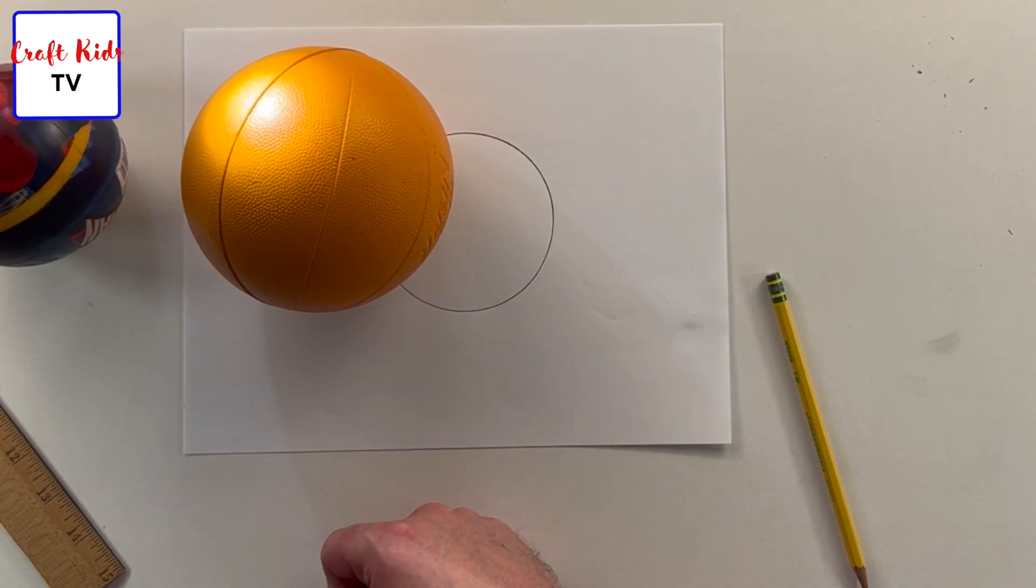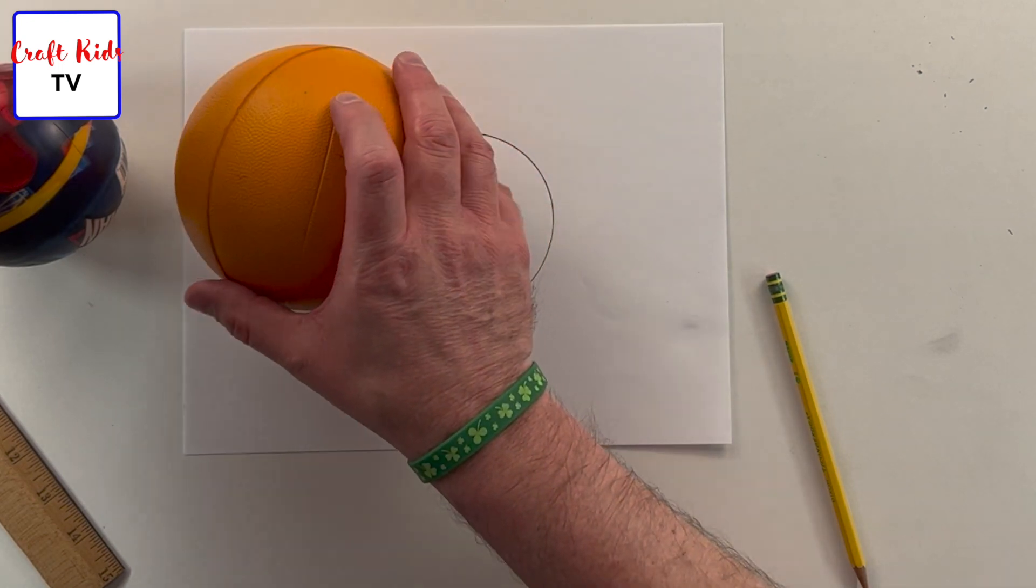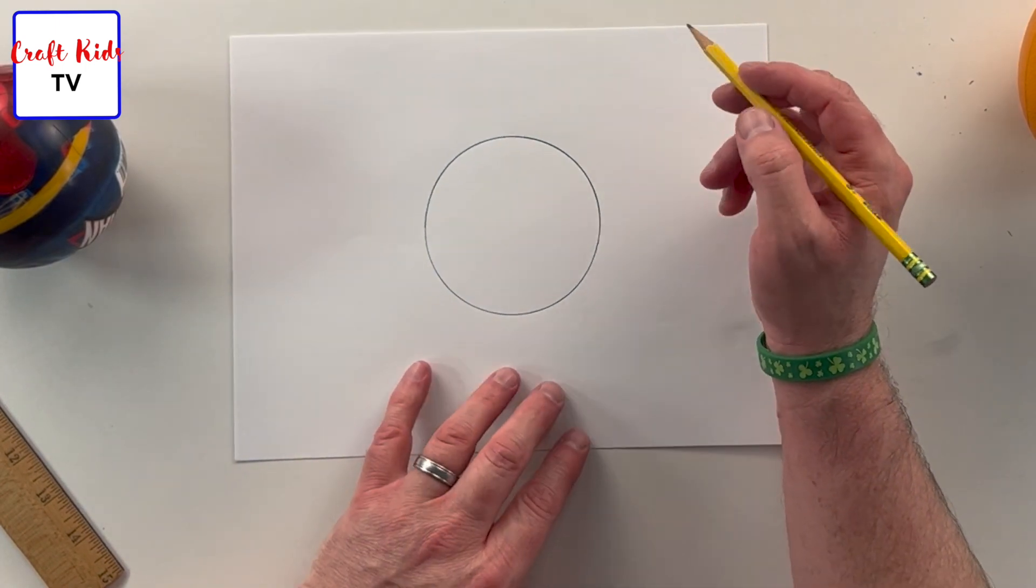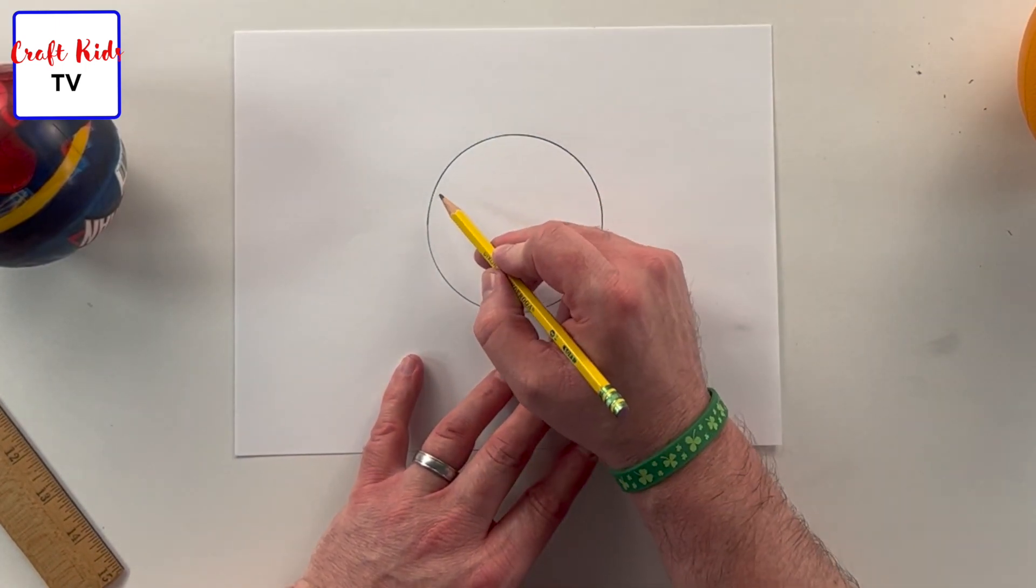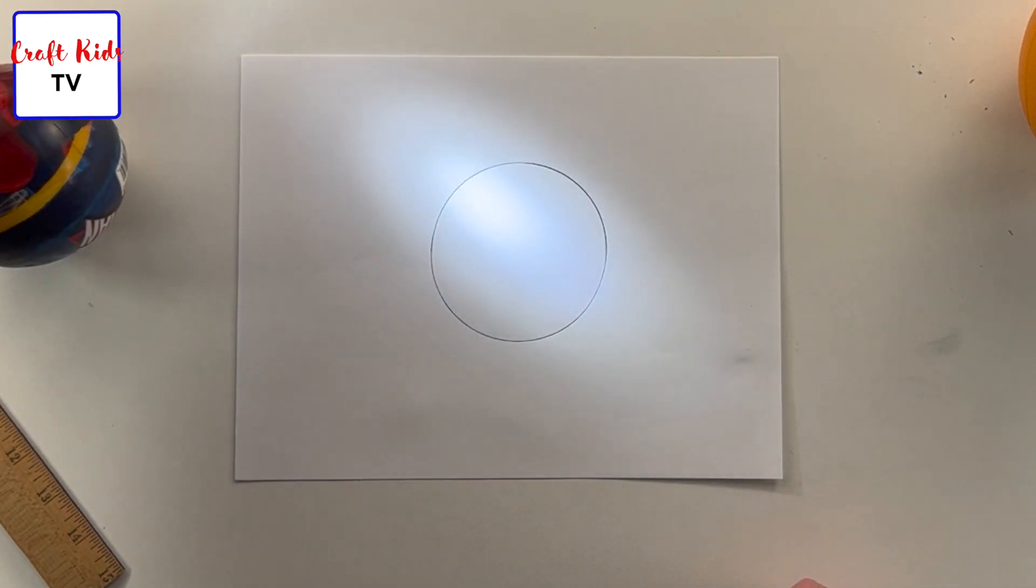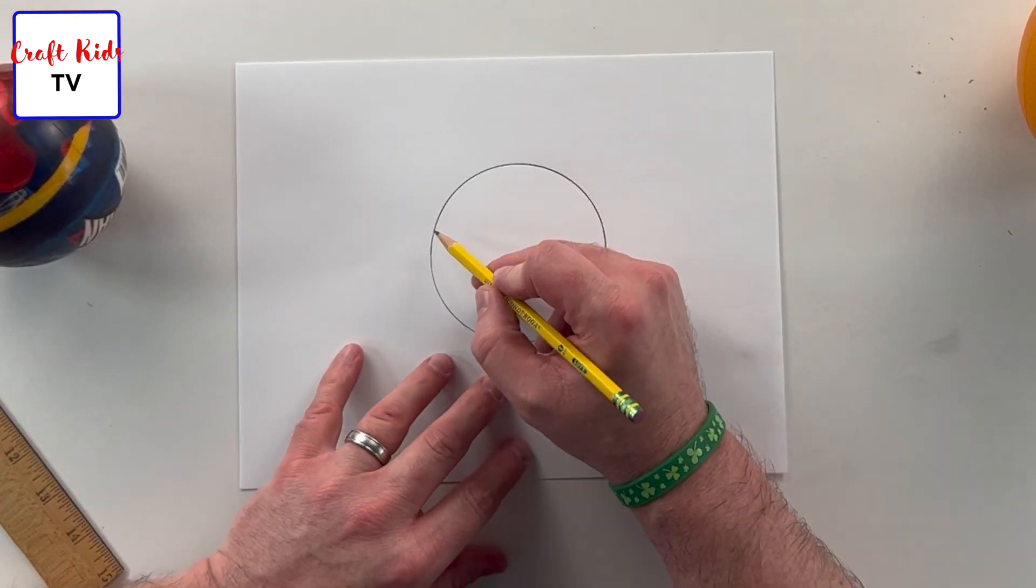So I'm gonna start shading now and I'll talk you through it. All right, so up top here, if we had our light, we pretend our light's coming from this direction, we are going to have the light center or the spot, the real intense spot where the light's hitting, it's gonna be up here.